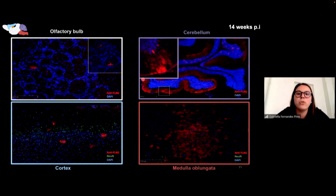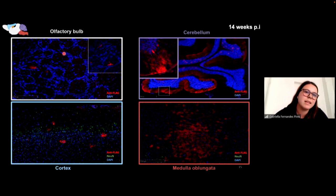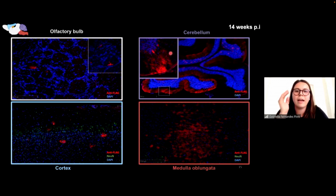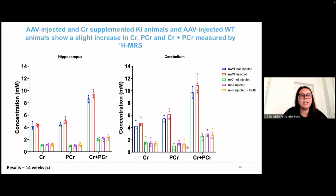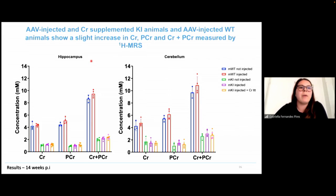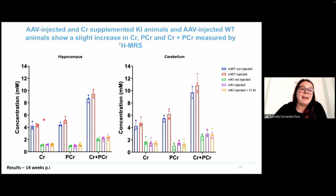At 14 weeks we confirmed the same transduction regions as at five weeks: the olfactory bulb, cortex, cerebellum — where you can appreciate a Purkinje cell positive for the anti-FLAG antibody — and the medulla oblongata. Before harvesting, we performed proton magnetic resonance spectroscopy and observed that AAV-injected and creatine-supplemented animals, as well as AAV-injected wild-type animals, showed a small but slight increase in creatine, phosphocreatine, and total creatine in the hippocampus and cerebellum.